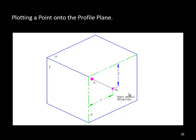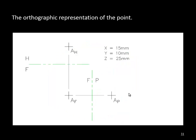That's essentially what you're going to be doing on the exercises today — taking a point, given values for where it's located, and locating it in the horizontal, the frontal, and the profile plane. For example, point A: the X direction is 15 millimeters — so it's 15 millimeters away from the profile plane. Y is 10 going this way, and Z is 25 coming down in the front. In the exercises I'll specifically tell you it's 15 millimeters down from horizontal or 25 millimeters to the left of the profile, which will help spell out what you need to do.